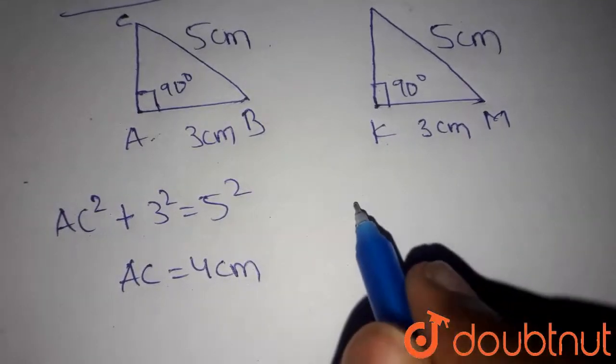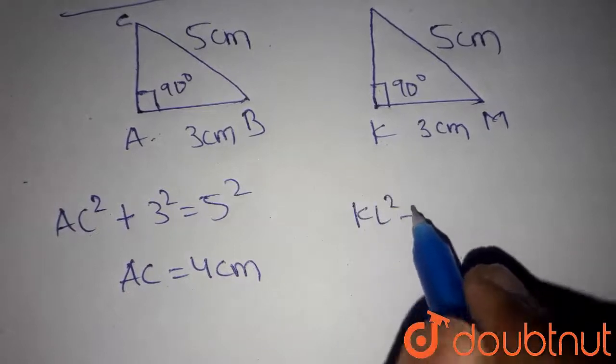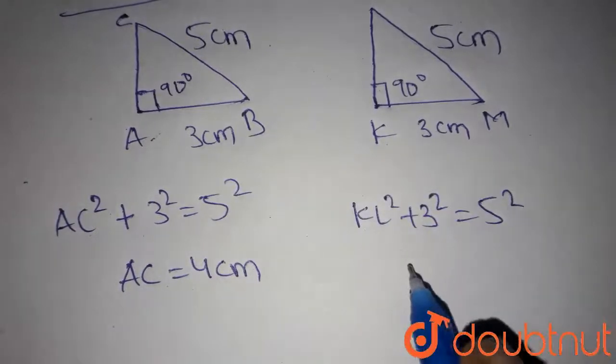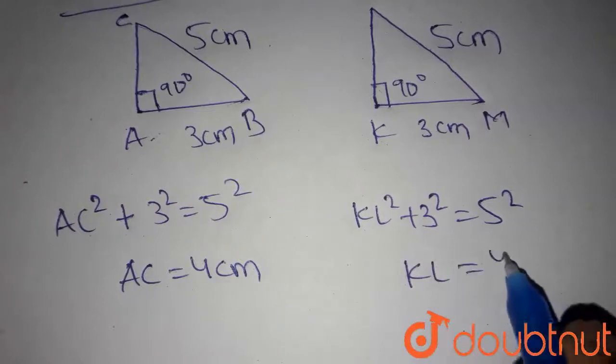In this triangle, we can write KL² plus 3² is equal to 5². We can get KL as 4 cm.